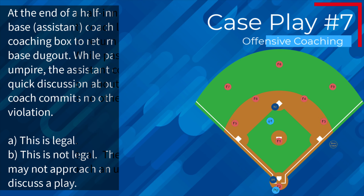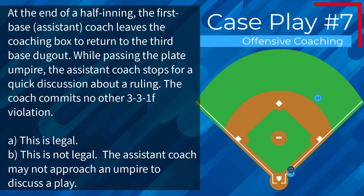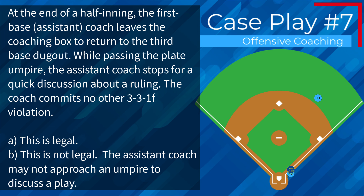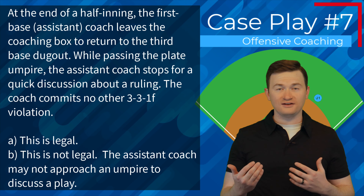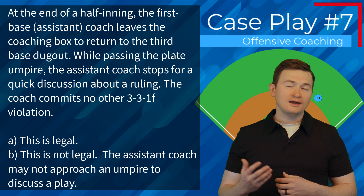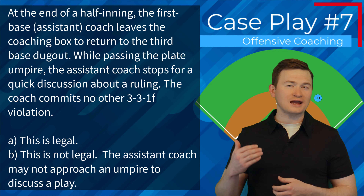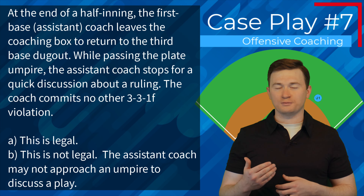Case play number seven: at the end of a half inning, the first base assistant coach leaves the coaching box to return to the third base dugout. While passing the plate umpire, the assistant coach stops for a quick discussion about a ruling. The coach commits no other Rule 3-3-1f violation. Is this A, legal, or B, not legal — the assistant coach may not approach an umpire to discuss a play? The correct answer is A — the assistant coach has to leave his position in the coach's box when his team goes on defense, so if he naturally comes by the umpire this isn't any deviation from where he needs to be. In general, talking with and explaining a ruling to an assistant coach can be helpful; help them understand the rules so long as they're asking in an appropriate manner.